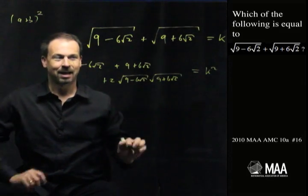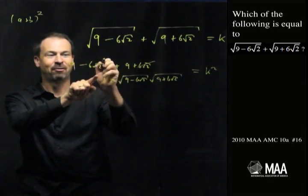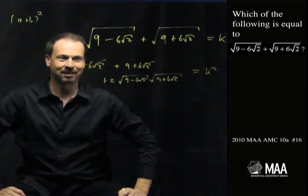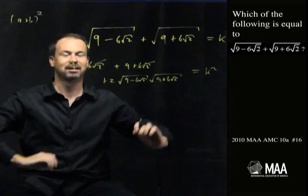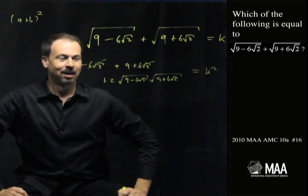I can see some nasty parts disappear right away. Take away 6 root 2, add 6 root 2. I've got 18 there plus some more square roots.